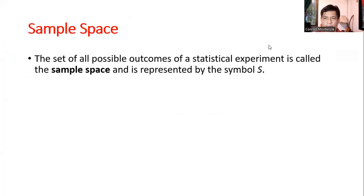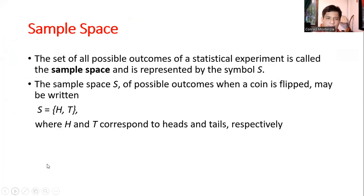First let's define a sample space. The set of all possible outcomes of a statistical experiment is called the sample space and it's represented by the symbol S. For example, the sample space of possible outcomes when a coin is flipped may be written as S equals H, T, where H and T corresponds to head and tails respectively. As you can see, if you toss a coin there are only two possible outcomes. It's either head or tail. So our set or our sample space contains only two elements, H and T.